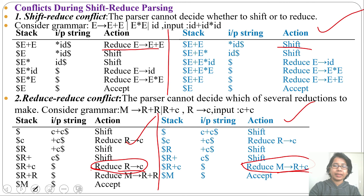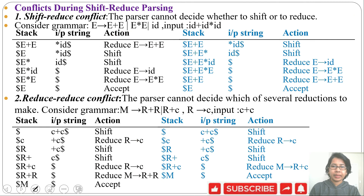So, what is shift-reduce conflict? If the parser cannot decide between shift and reduce — here one parser reduced while the other shifted — that is a shift-reduce conflict. And what is reduce-reduce conflict? If there are more than one handle present and you cannot decide which handle to reduce, that is a reduce-reduce conflict. If this lecture is helpful for you, please like and subscribe. Thank you.